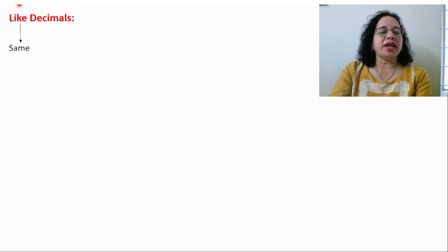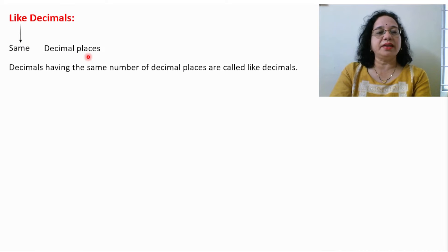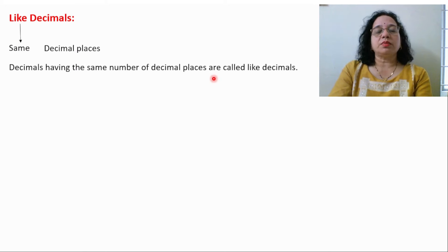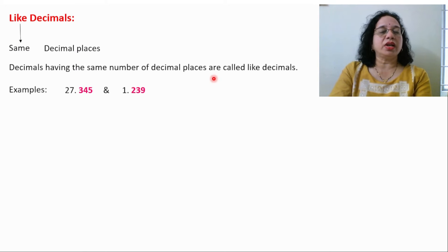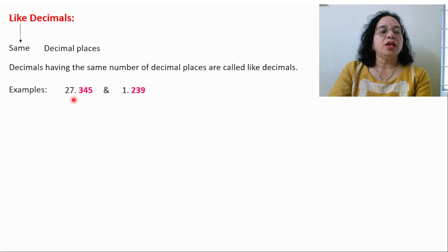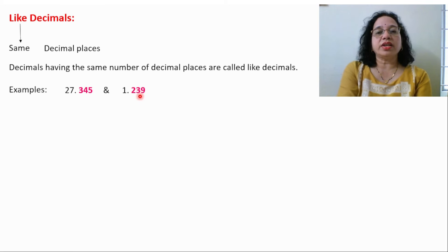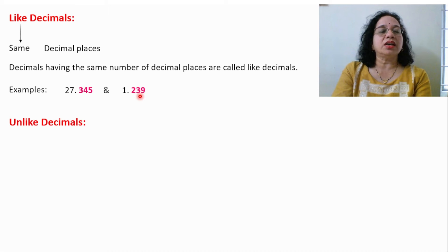Now, like decimals. 'Like' means same — your decimal places are the same. Decimals having the same number of decimal places are called like decimals. For example, 27.345 and 1.239: after the decimal there are 3 digits in both. These are called decimal places, and since the decimal places are the same, these are like decimals.